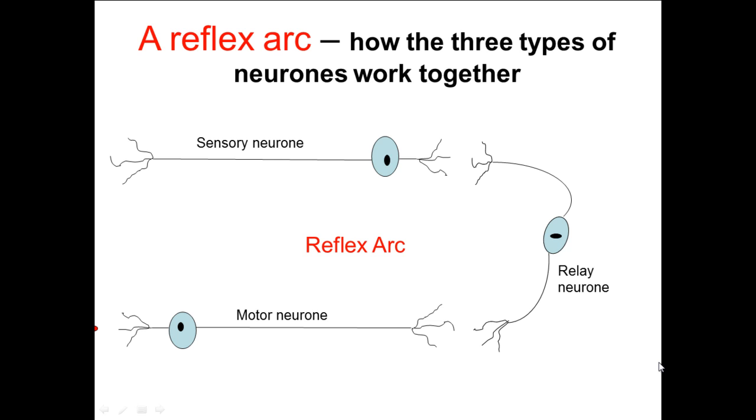If we use a situation of you putting your hand on something hot, that causes a reflex where you basically whip your hand away from the hot object very, very quickly. We can see how these three types of neurons interact with one another. If you think about the first thing that would happen, if you put your hand on, let's say, a hot plate, the first thing that would happen is that it would be picked up by a receptor. That receptor might be the temperature receptors in your hand.